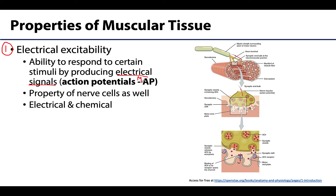Action potentials are often abbreviated as AP. Electrical excitability is actually a property that muscle shares with nerve cells, so there is a property shared with the nervous system here. You'll be talking about that in much more detail in the neurology or neuroanatomy portion of the course. These action potentials travel along the muscle cell's plasma membrane, which you can see here, and this is possible due to ion channels in these regions.